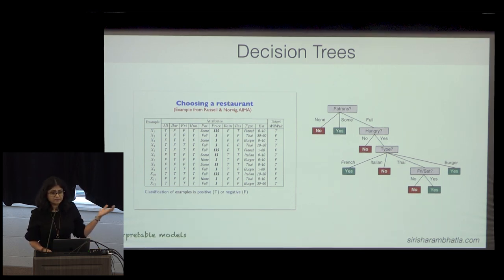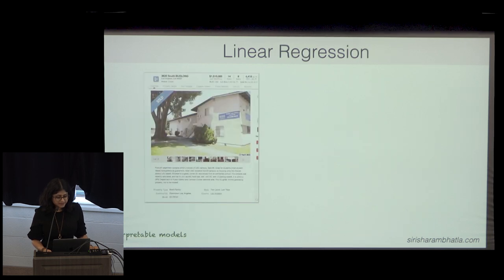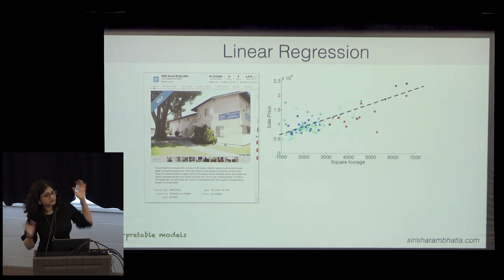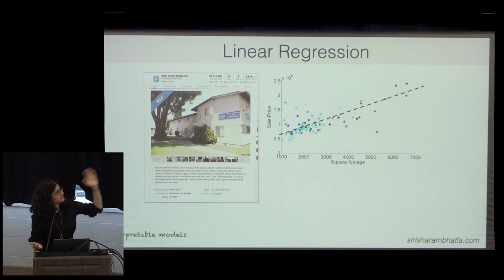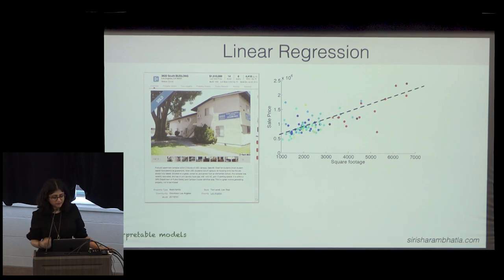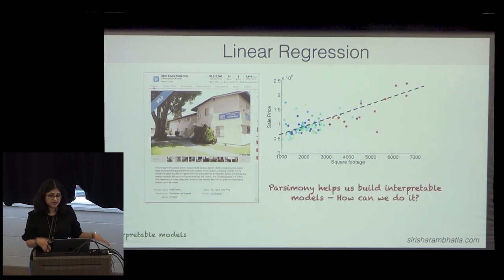Another workhorse is linear regression. If we have a house with a number of features, we can say this is what determines the house price, and we see that line. But not all features impact the price in a meaningful way — only certain ones do. And that is where the idea of parsimony, or sparsity, comes into play.